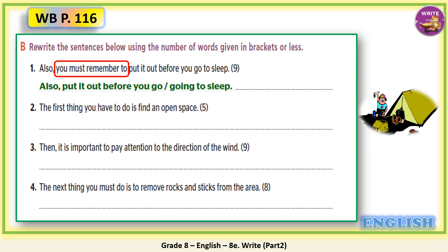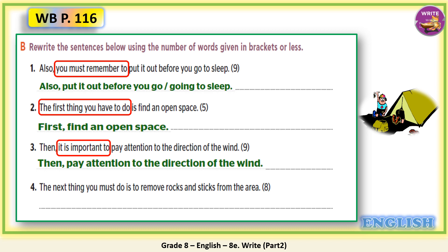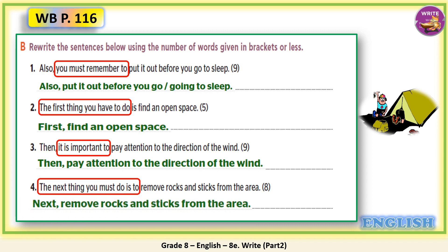Two: 'The first thing you have to do is find an open space.' Use just five words. Three: 'Then, it's important to pay attention to the direction of the wind.' Use just nine words. We can say: Then, pay attention to the direction of the wind. Four: 'The next thing you must do is to remove rocks and sticks from the area.' Eight words. We can just say: Next, remove rocks and sticks from the area.